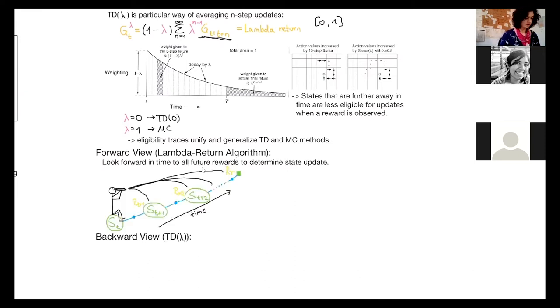So in the forward view, you can imagine it like looking forward into time to all future rewards to determine the state update. So you are sitting on like a ray of states that go out until the terminating state and you just look ahead and see how much reward you will get.